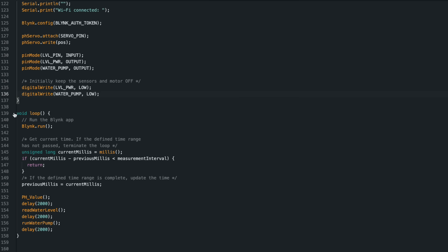In the loop section, blink is activated and the time interval is calculated, then the functions are executed.